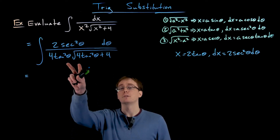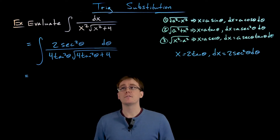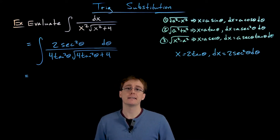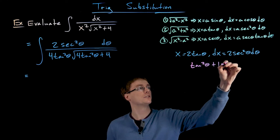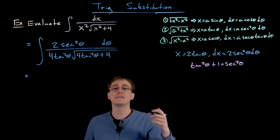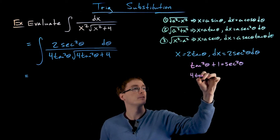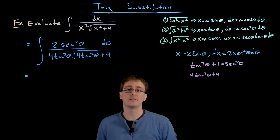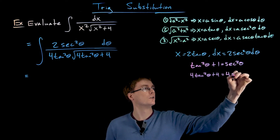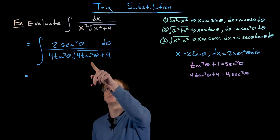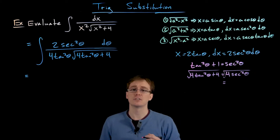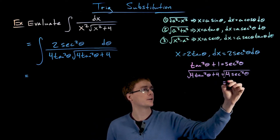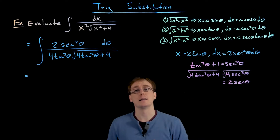Our next steps involve simplifying the integrand, particularly eliminating the square root of 4 tangent squared plus 4. We use the Pythagorean identity: tangent squared of theta plus 1 equals secant squared of theta. Multiplying by 4 gives us 4 tangent squared of theta plus 4 equals 4 secant squared of theta. Taking the square root of both sides, the square root of 4 secant squared of theta simplifies to 2 times secant of theta.